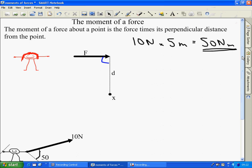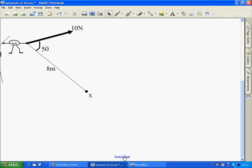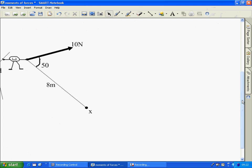This is the simplest example we can have. Let's look at a slightly more complicated one. We have Cedric pushing with a force of 10 newtons at an angle of 50 degrees, 8 metres from the pivot point X.